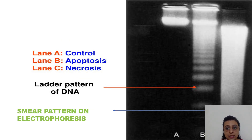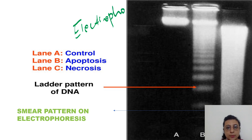This is very important — the electrophoresis pattern, the agarose gel electrophoresis pattern. In apoptosis, it is a planned type of cell death, so even the electrophoresis pattern is planned.